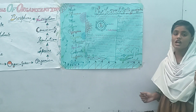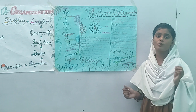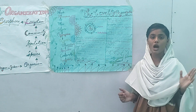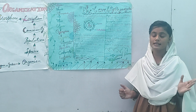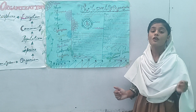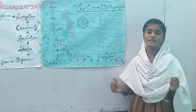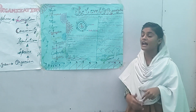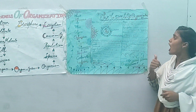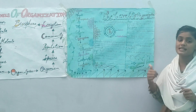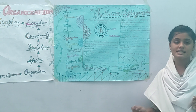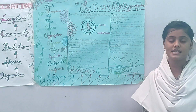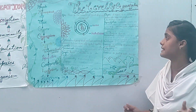Organ system: a combination of two or more organs that perform a specific function is called an organ system. Examples include the lung system, the digestive system, etc.